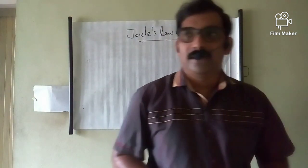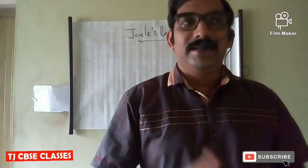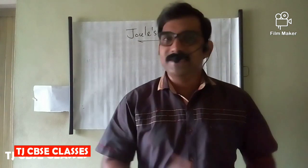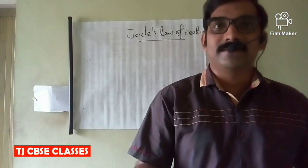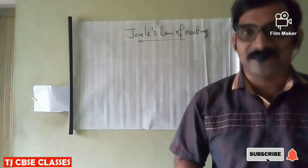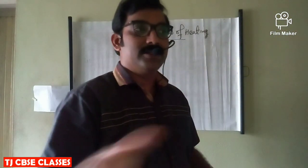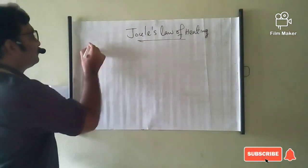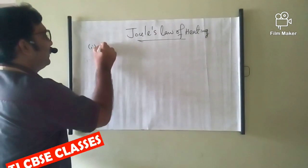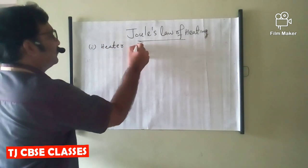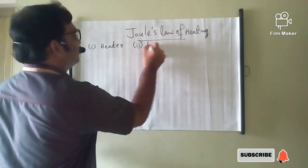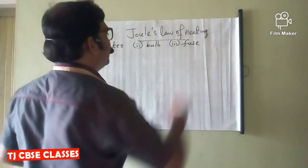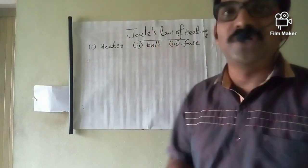Joule's Law of Heating. Here you know the working of electric iron, electric heater and electric bulb. In all these devices, the heat energy is radiated when electric energy is passing through each. These instruments — electric heater, electric bulb, and electric fuse — are all working on the principle of Joule's Law of Heating.